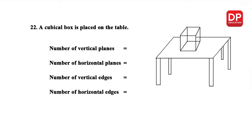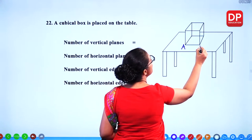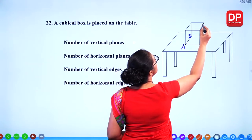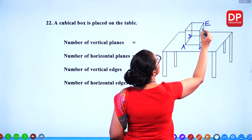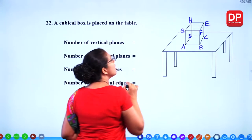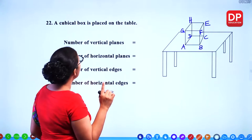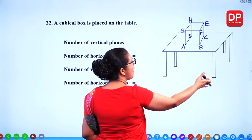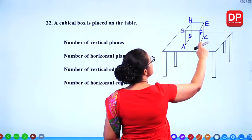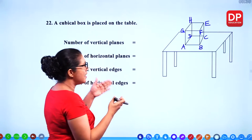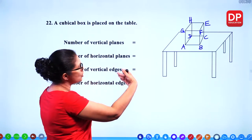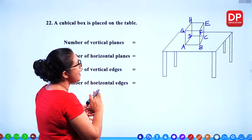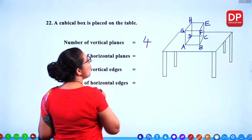A cubical box is placed on the table. We label the vertices A, B, C, D, E, F, G, H. How many vertical planes are there? The faces FEBC, GHAD, DCEH, and ABFG are the four vertical planes. How many horizontal planes? ABCD is one horizontal plane and EFGH is another — so two horizontal planes. How many vertical edges? AG, HD, FB, EC — four vertical edges.